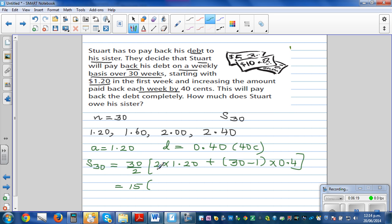Bracket, so 2 times $1.20 is $2.40 plus 29 times 0.4. So let me directly use the calculator.